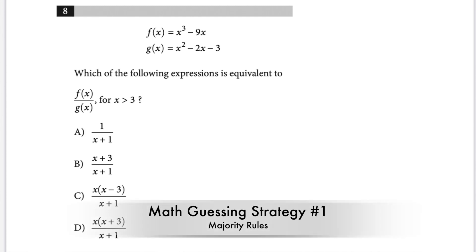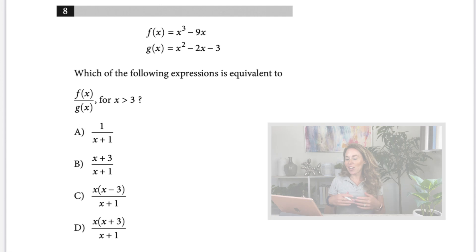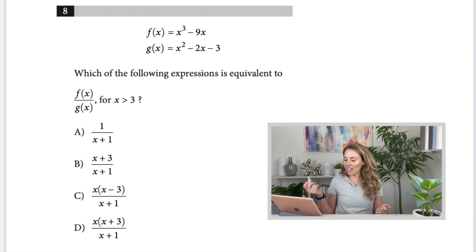Now let's talk about different types of questions and what guessing strategies you would use. On this problem — it's number eight — all of the answer choices are different. There are different characteristics where you can start to whittle down what certain questions have in common. Think of yourself like on a kid's show like Sesame Street where you're trying to figure out which one doesn't belong. If I have a carrot, an orange, a celery stalk, and a broccoli — obviously the orange doesn't belong because it's a fruit. You're doing the same thing here with the answer choices.